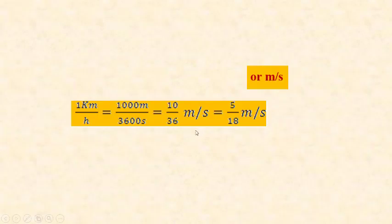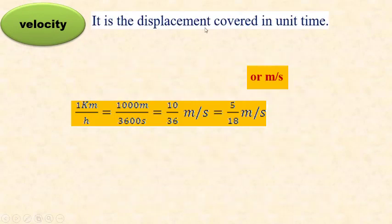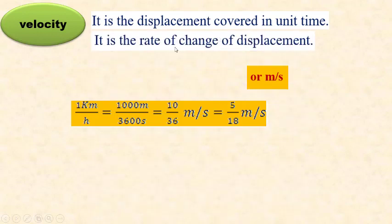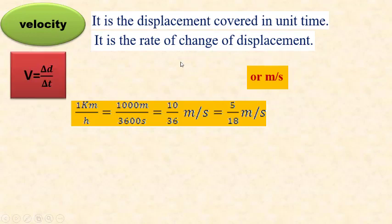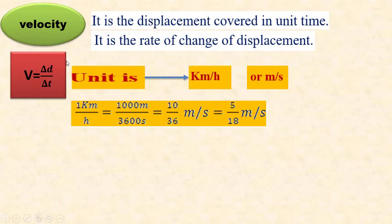Now it's time to know the meaning of velocity. Velocity is the displacement covered by a moving object in a unit of time. We can say it is the rate of change of object displacement. The unit used to measure velocity is kilometers per hour or meters per second. The formula used to measure velocity is delta d over delta t, where delta means the difference between values.